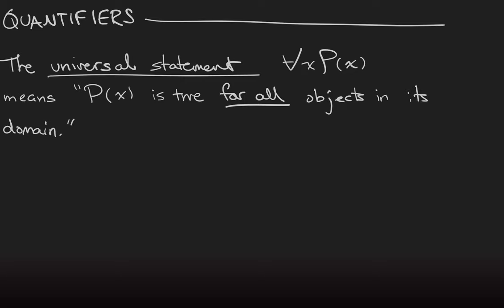The universal statement, which is read for all x P(x) is true, this thing right here is called the universal quantifier, means that the predicate P(x) will make a true statement when applied for any object in its domain.